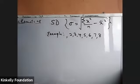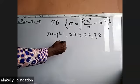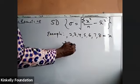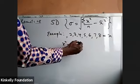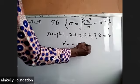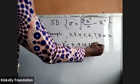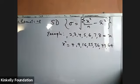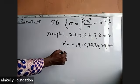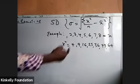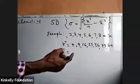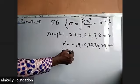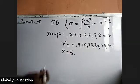Using an example with data x: 4, 9, 16, 25, 36, 49, and 64. The mean is 35 divided by 7, which equals 5. Now we compute summation of x squared.